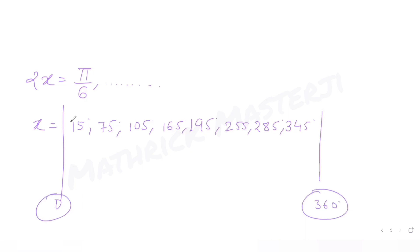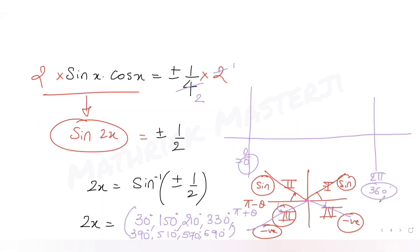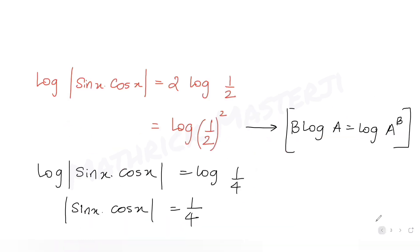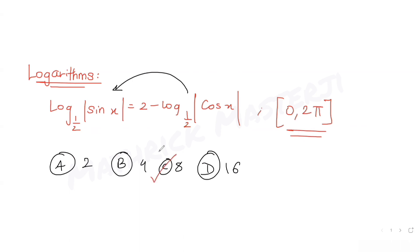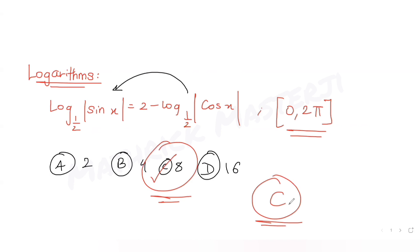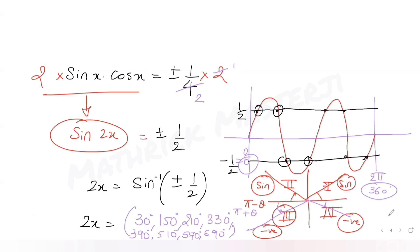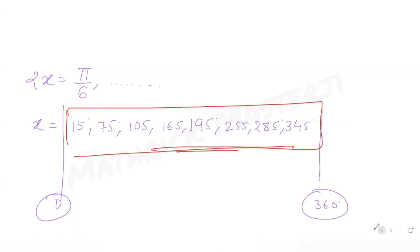So we have found 8 distinct solutions for this equation. Drawing the curve of sin 2x, we see 2 positive values and 2 negative values per cycle, and over [0, 2π] that gives 8 solutions total. The answer matches option C (which is 8). I hope you've understood how to solve this type of question by applying logarithm rules and plotting the sine curve.